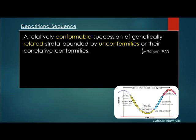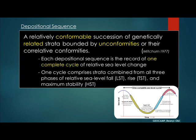Recall that we've talked about the usage of conformity, genetically related, unconformities, and correlative conformities in previous models. The idea here is that each depositional sequence is the record of one complete cycle of relative sea level change, comprised of a falling stage which deposits the Low Stand Systems Tract (LST), a rising sea level stage which deposits the Transgressive Systems Tract (TST), and the peak sea level or maximum stability phase which deposits the High Stand Systems Tract (HST).